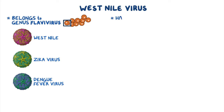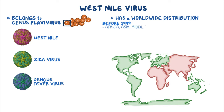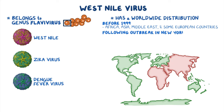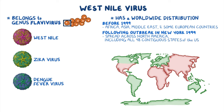West Nile virus has a worldwide distribution. Before 1999, it was present mainly in Africa, Asia, the Middle East, and some European countries. Following an outbreak in New York in 1999, it spread across North America, including all 48 of the contiguous states of the US, and has now been found in South America and parts of the Caribbean.